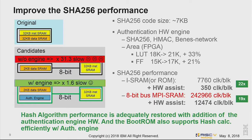Another problem is SHA-256 execution. For the software implementation it takes about 6 or 7 kilobytes and contains many constants. We implemented SHA-256 in hardware, also supporting HMAC. The FPGA area increased by about 30%, but the performance is almost 20 times faster, so we chose the hardware engine for SHA execution.